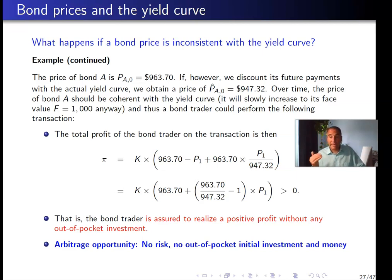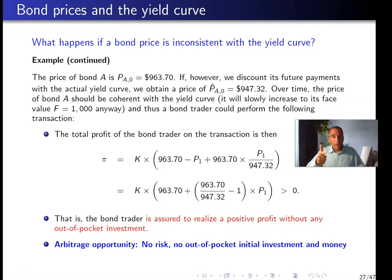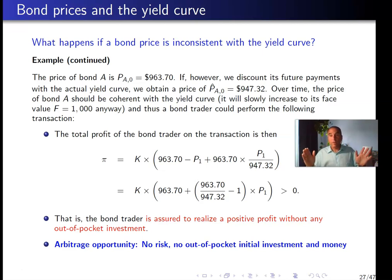This is what we call an arbitrage opportunity. Profit is guaranteed, with no out-of-pocket expenses at the start. The trader borrowed shares, sold them short, received cash, invested in something correctly priced, and at year-end makes money without having invested anything. When these opportunities exist, bond traders will jump on them immediately — it's too easy to make money.